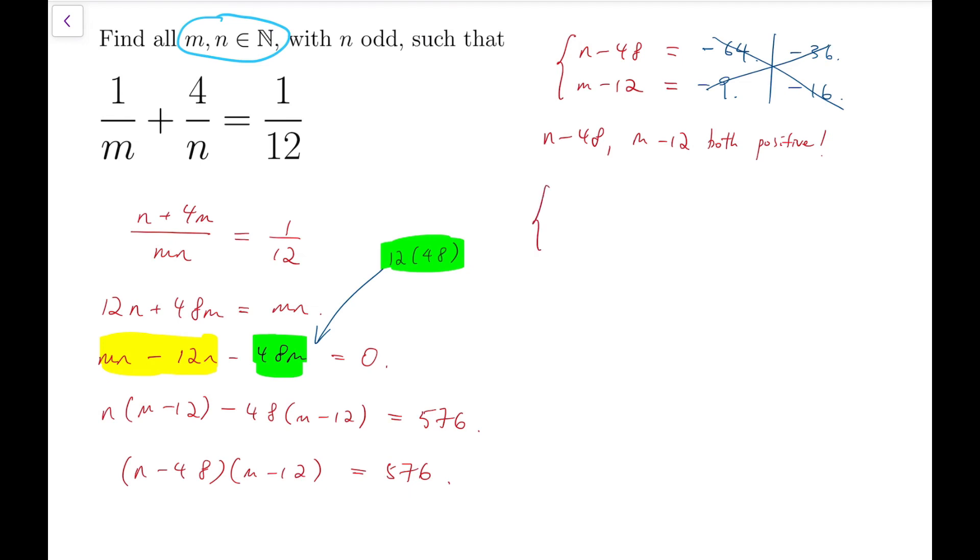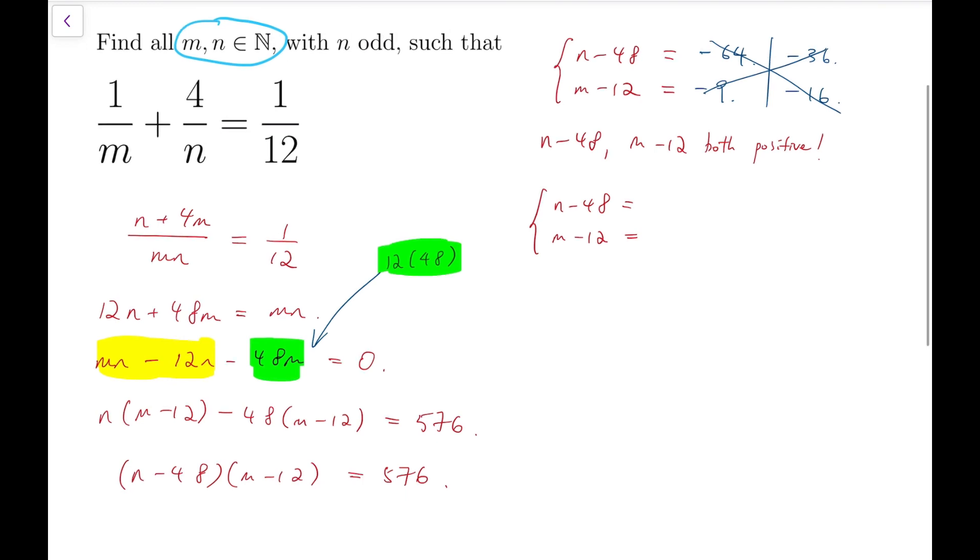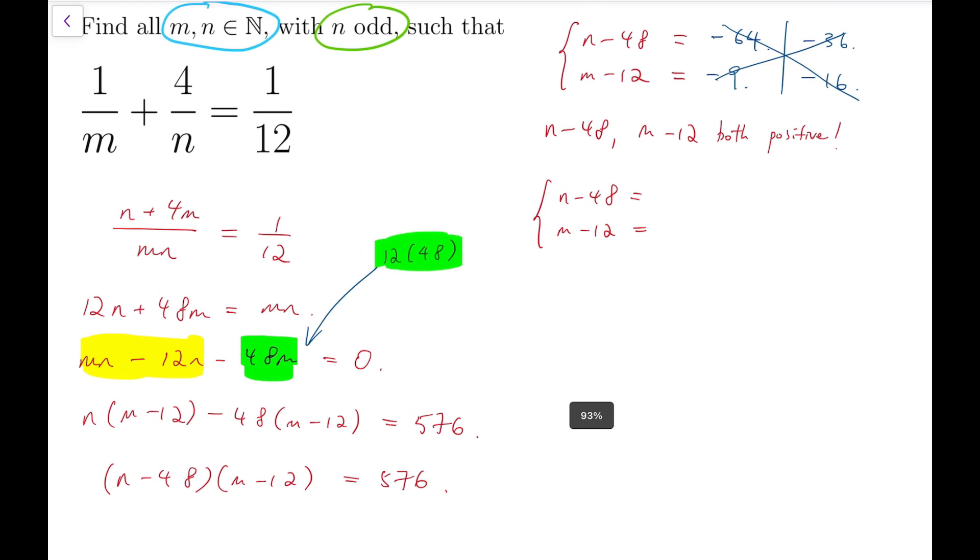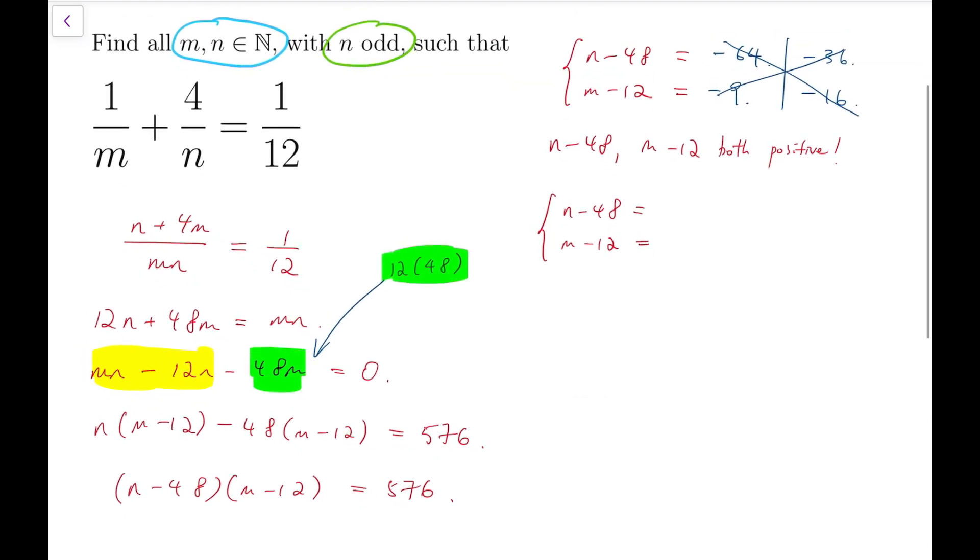So, we only have to consider positive factors of 576. Now, also, bear in mind that n is an odd number. So, that means n minus 48 also has to be an odd number. This number is also odd.